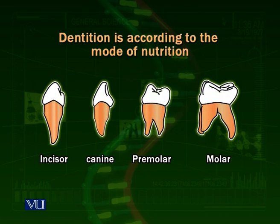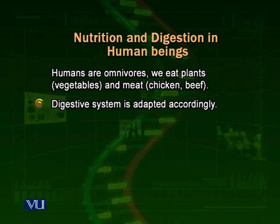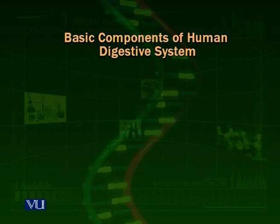We are omnivores; we can eat both. If we look at our teeth, our teeth have all four types: we have incisors — our front teeth — we have canines on all four sides, then come our premolars and the molars. So we have all four kinds of teeth because we have to take all types of food. The digestive system also adapts according to the nature of the food available to an organism, and a human being has access to almost all types of foods.